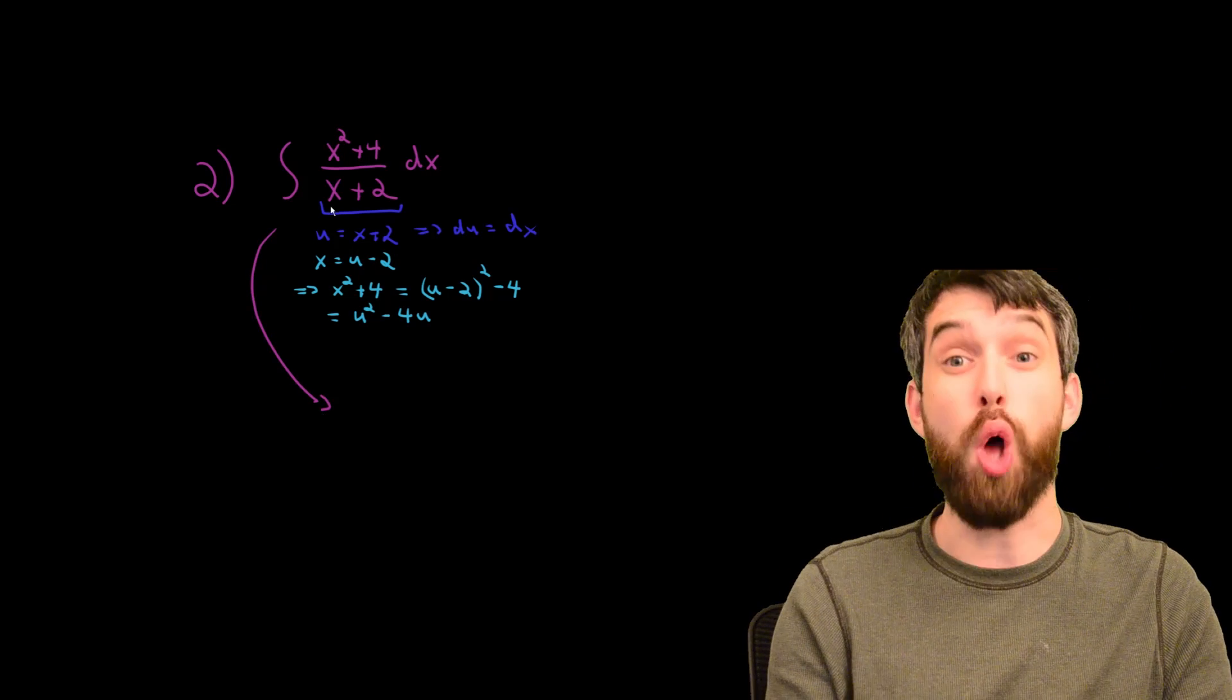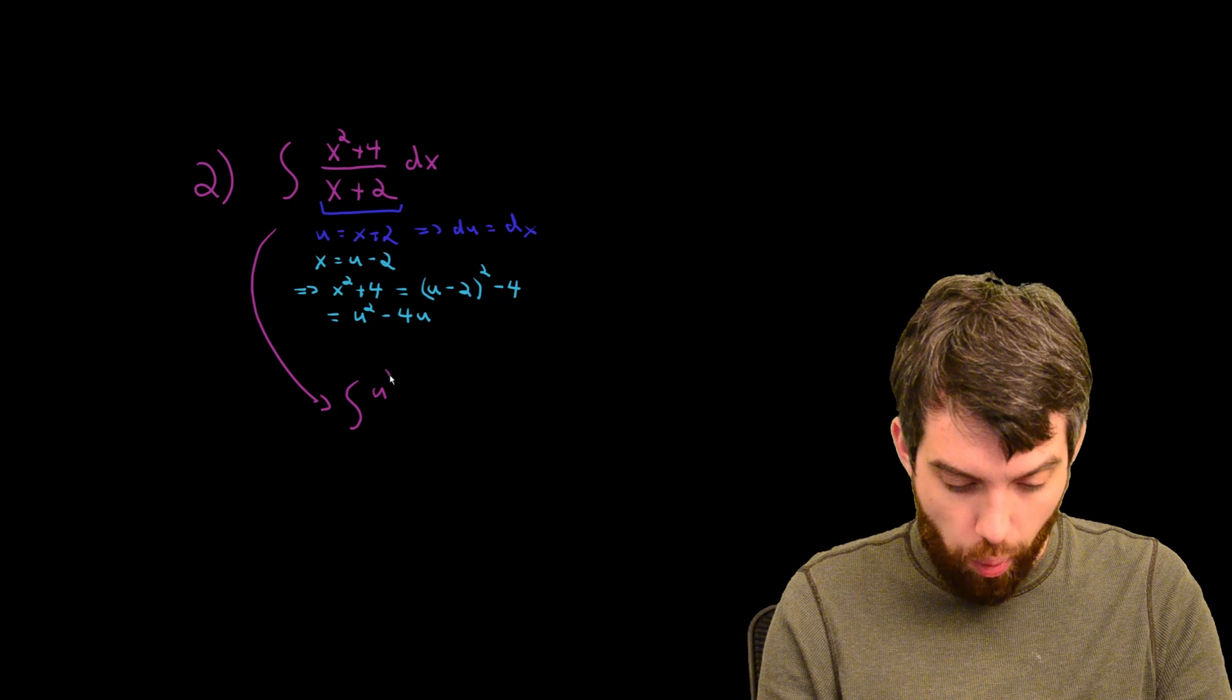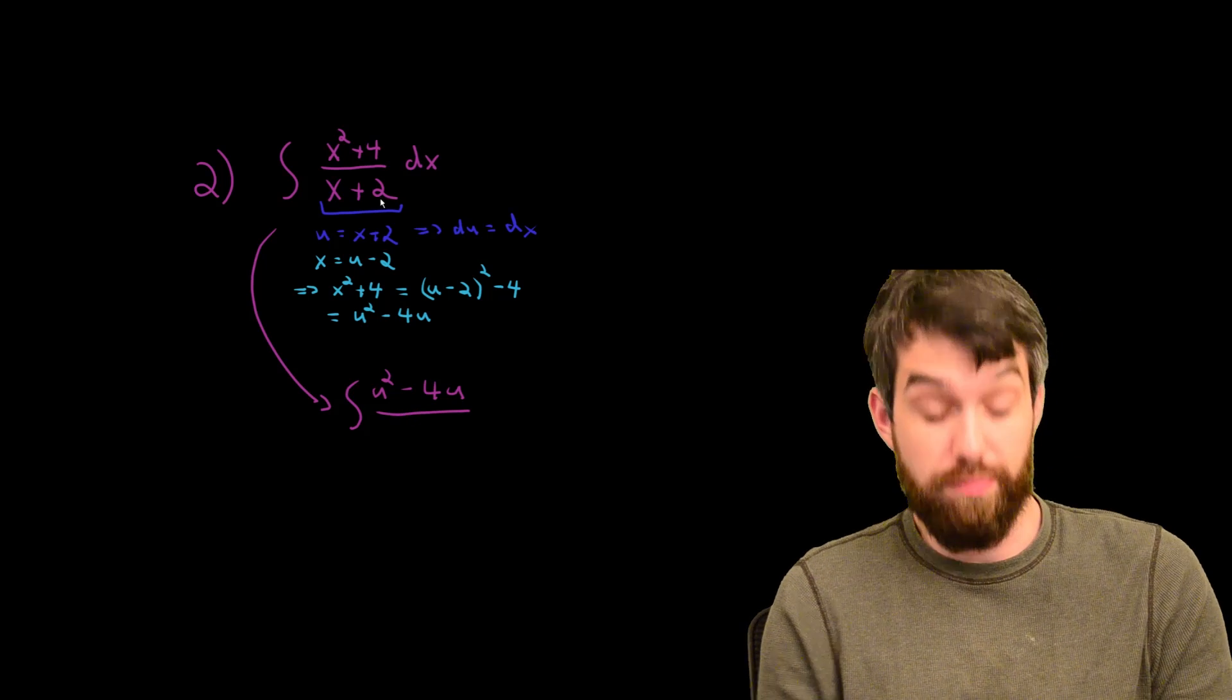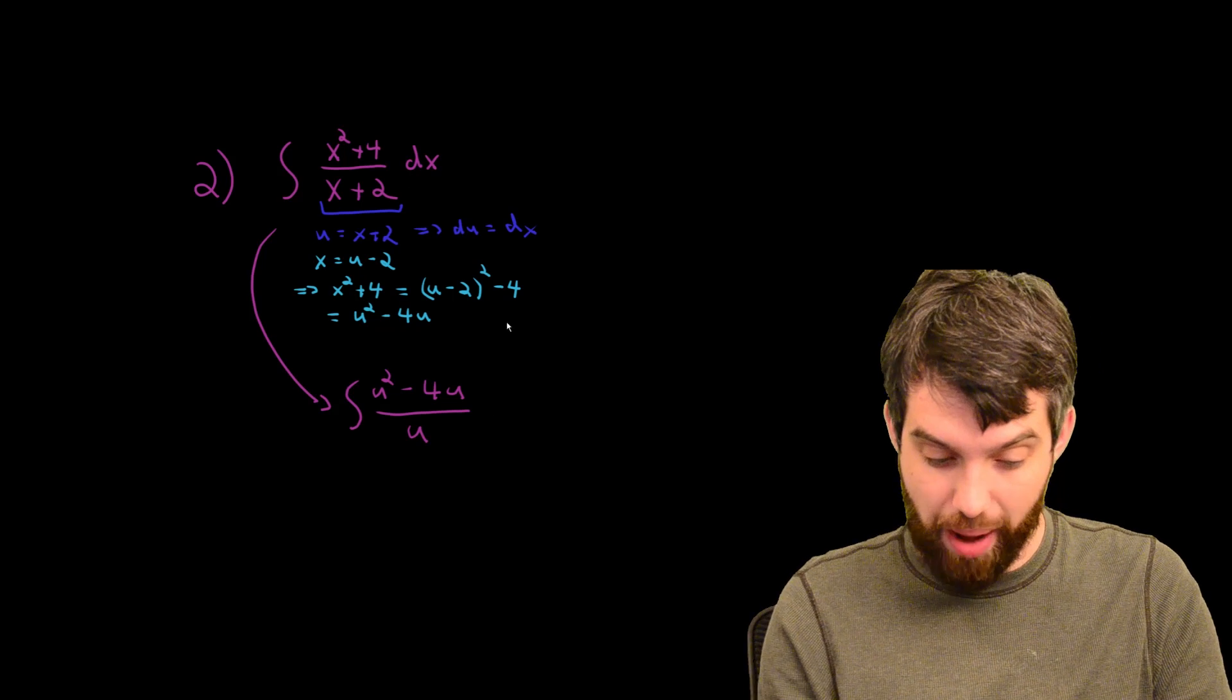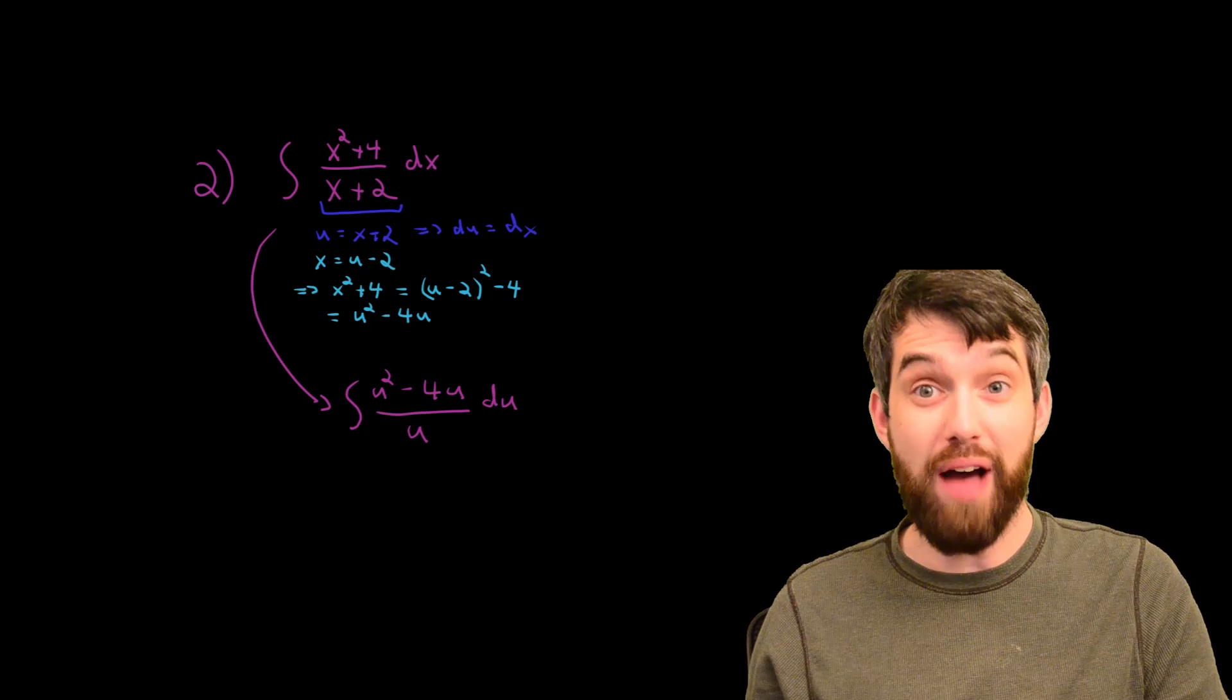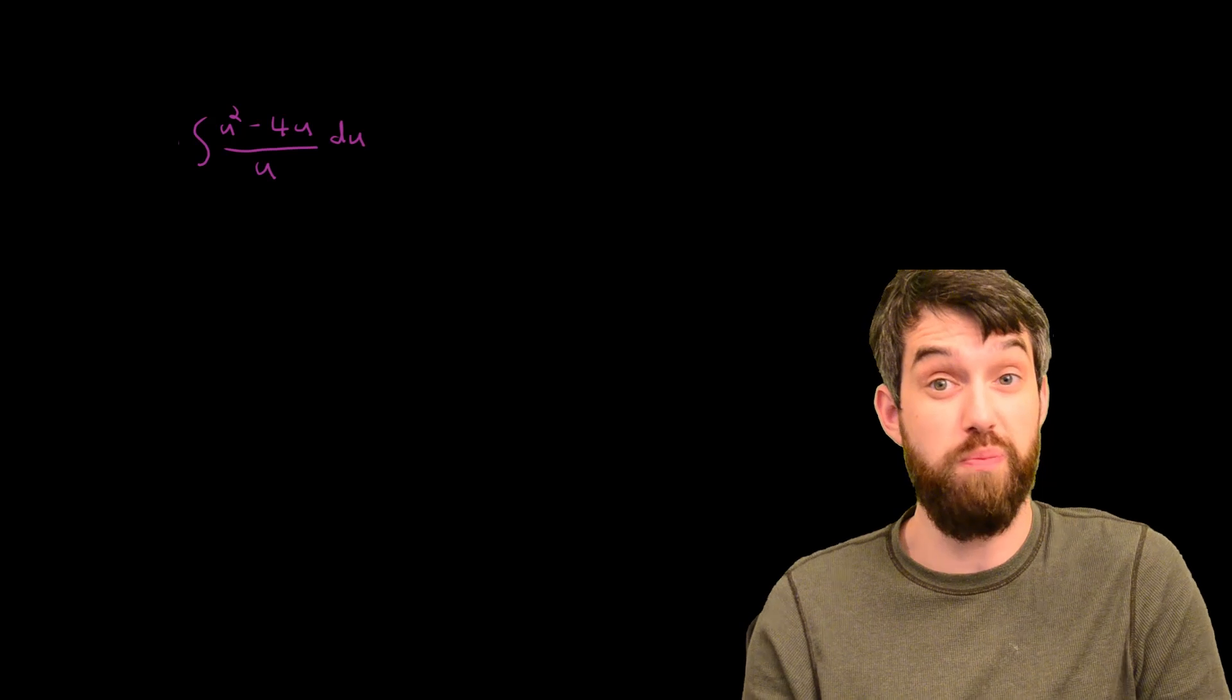So I'm going to take this, which was all written in terms of x, and write it all in terms of u. I'm going to say that this is the integral, while on the top it is the u squared minus the 4u, as we determined. On the bottom, x plus 2, that was just our definition of u. And then finally, the dx gets translated by the formula dx equal to du into just a du. So what do I have? I have an integral that is now 100% an integral in terms of u, and we can just go and execute computing this.